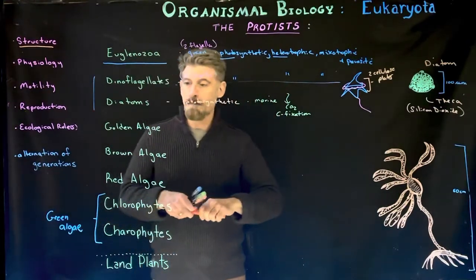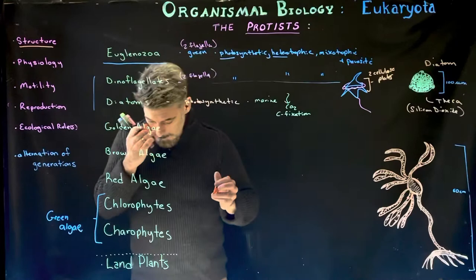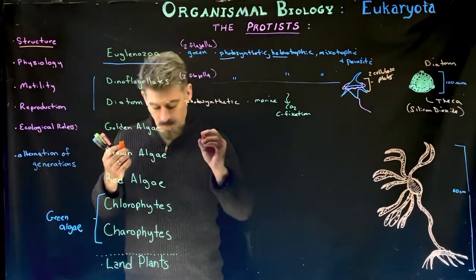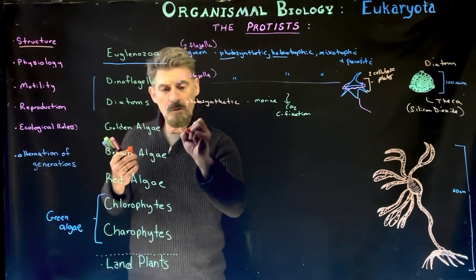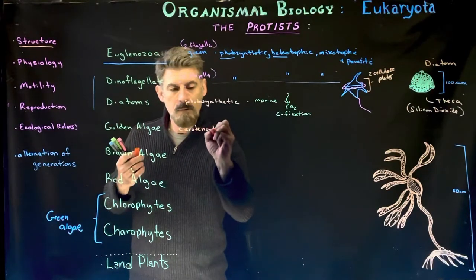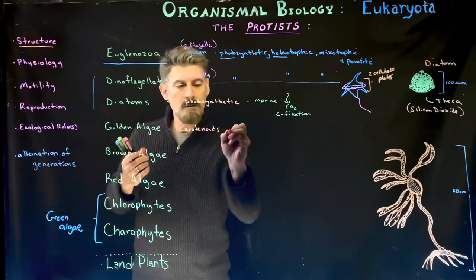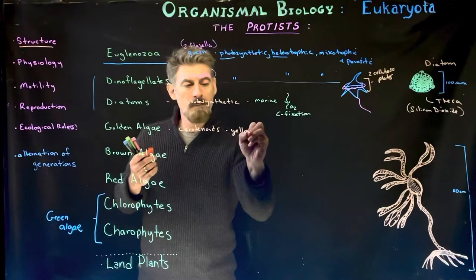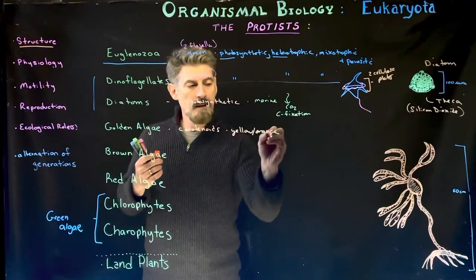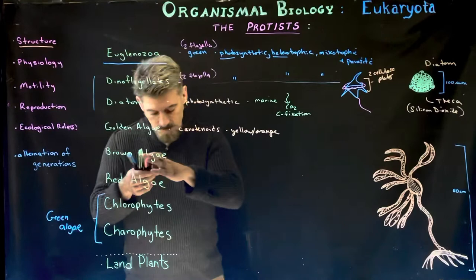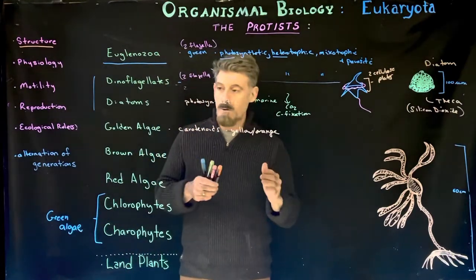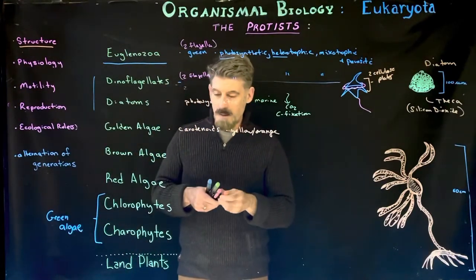Golden algae can be single-celled or multicellular, and they contain carotenoids, so they can look more yellow-orange in color. They are really their own group based on their different pigment type.